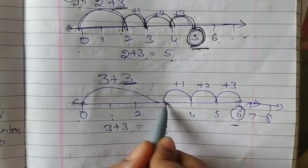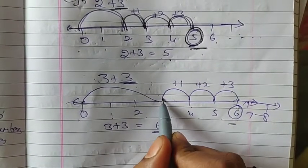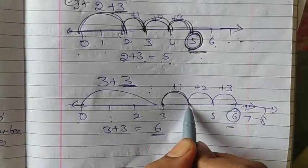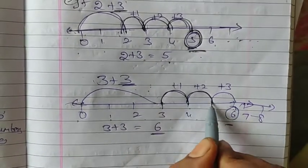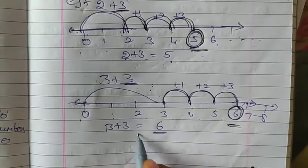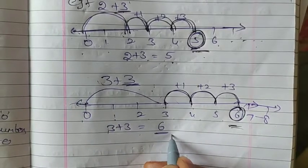0 to 3. Next, we have to move from left to right on the number line for addition. 3 plus 1, 3 plus 2, 3 plus 3. The final answer is 6. That is 3 plus 3 is equals to 6.